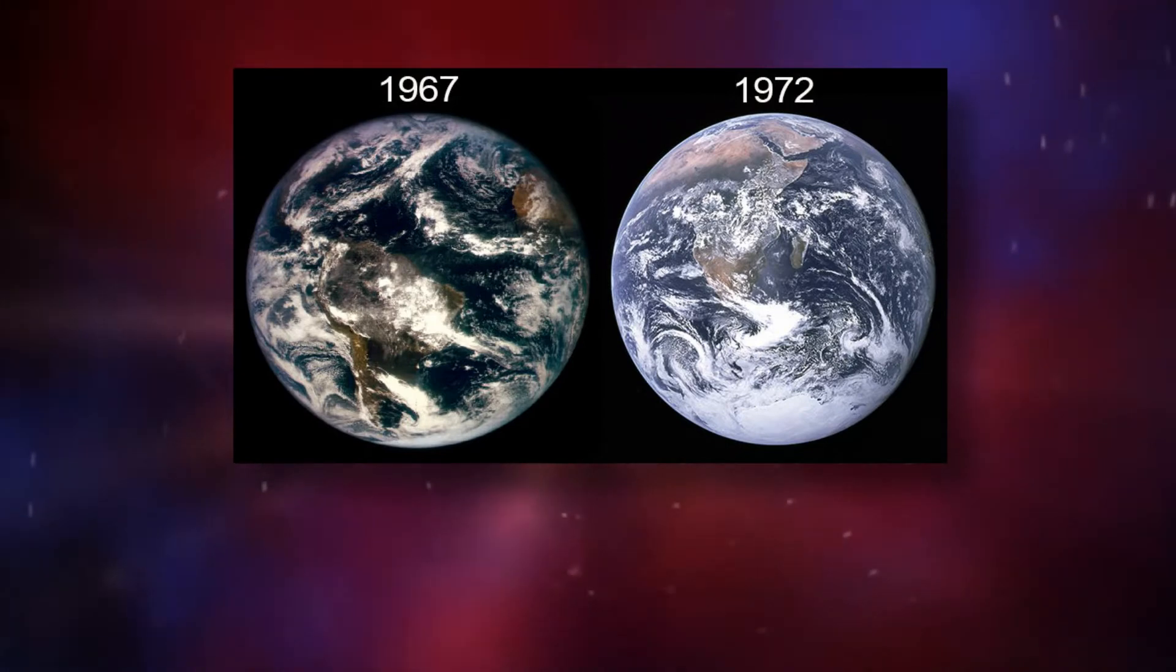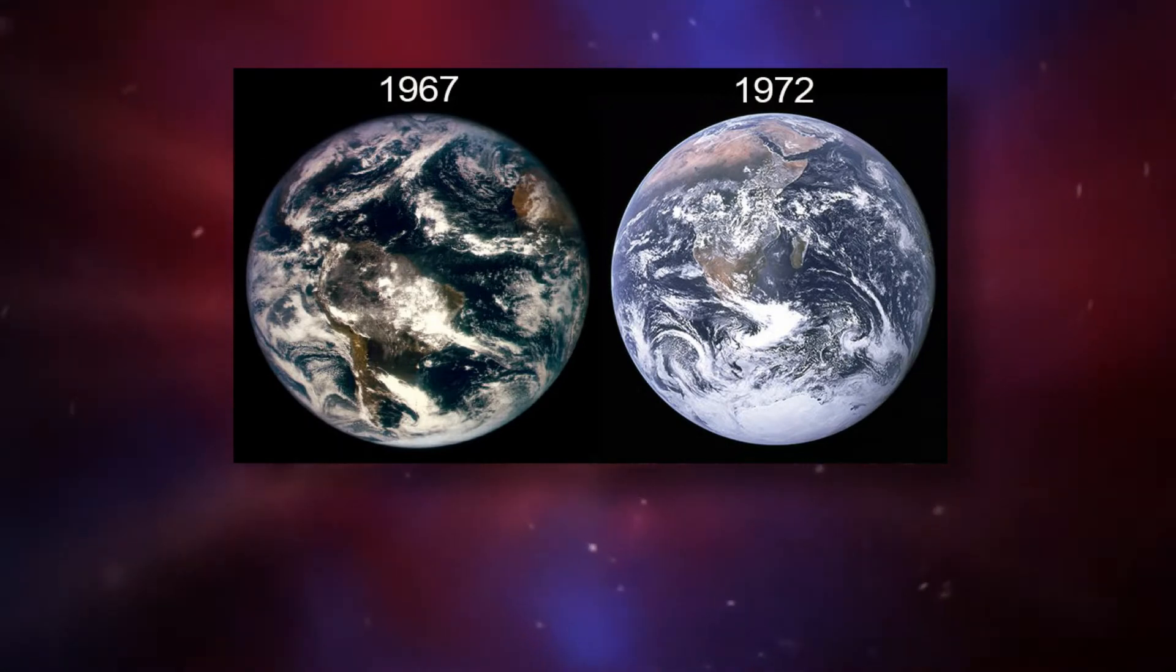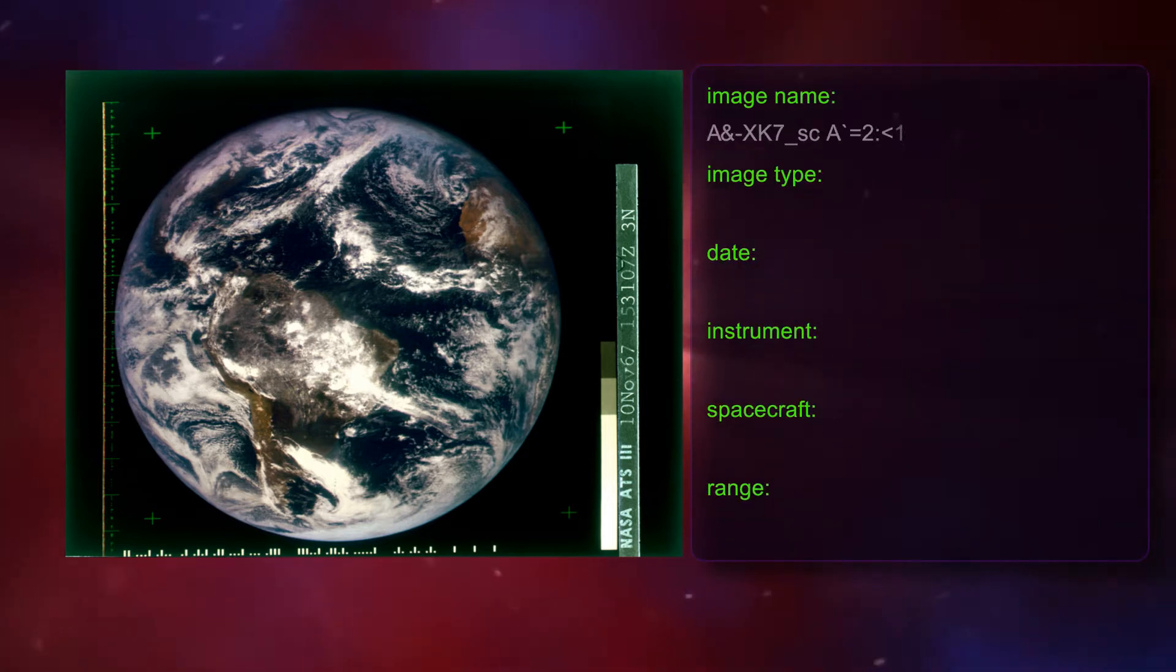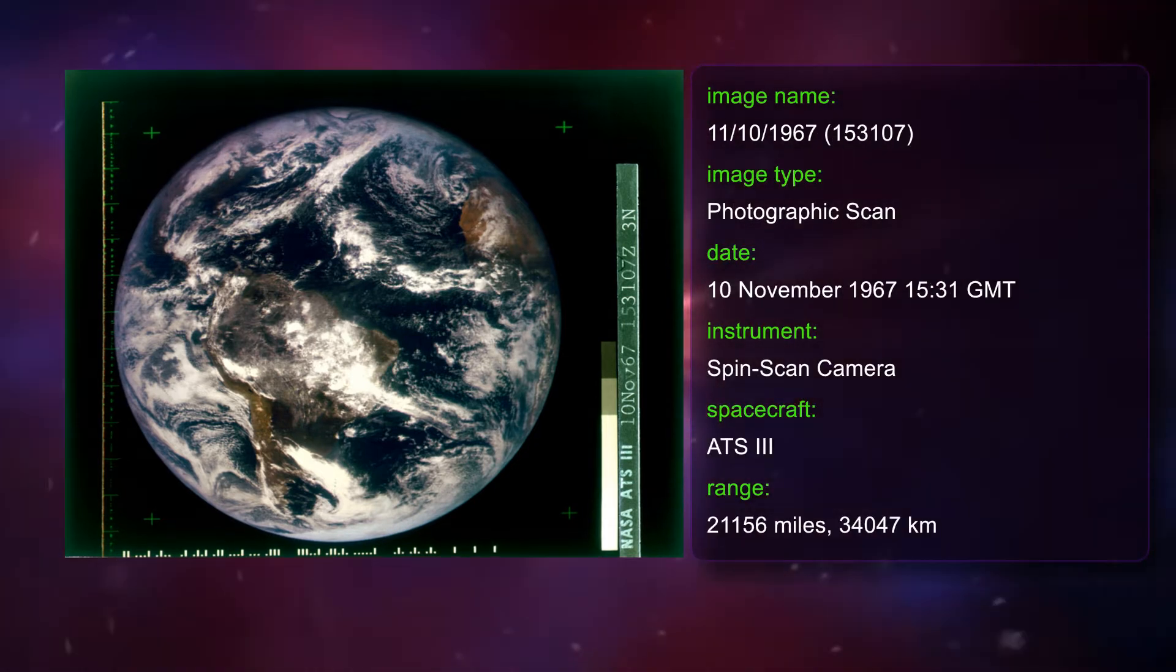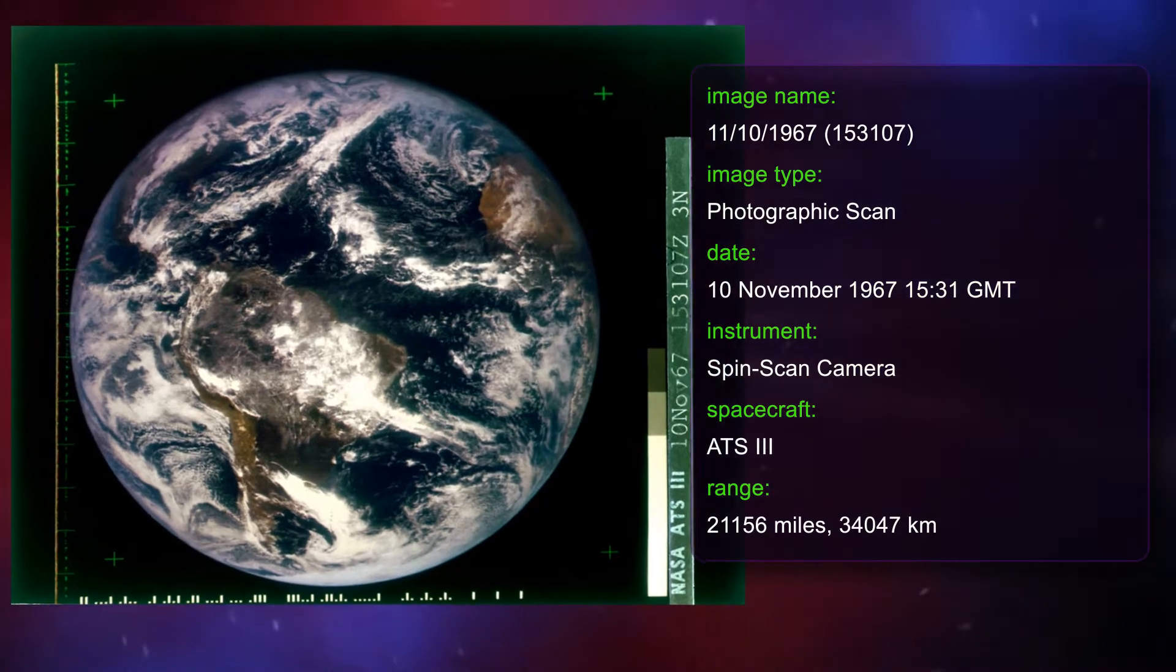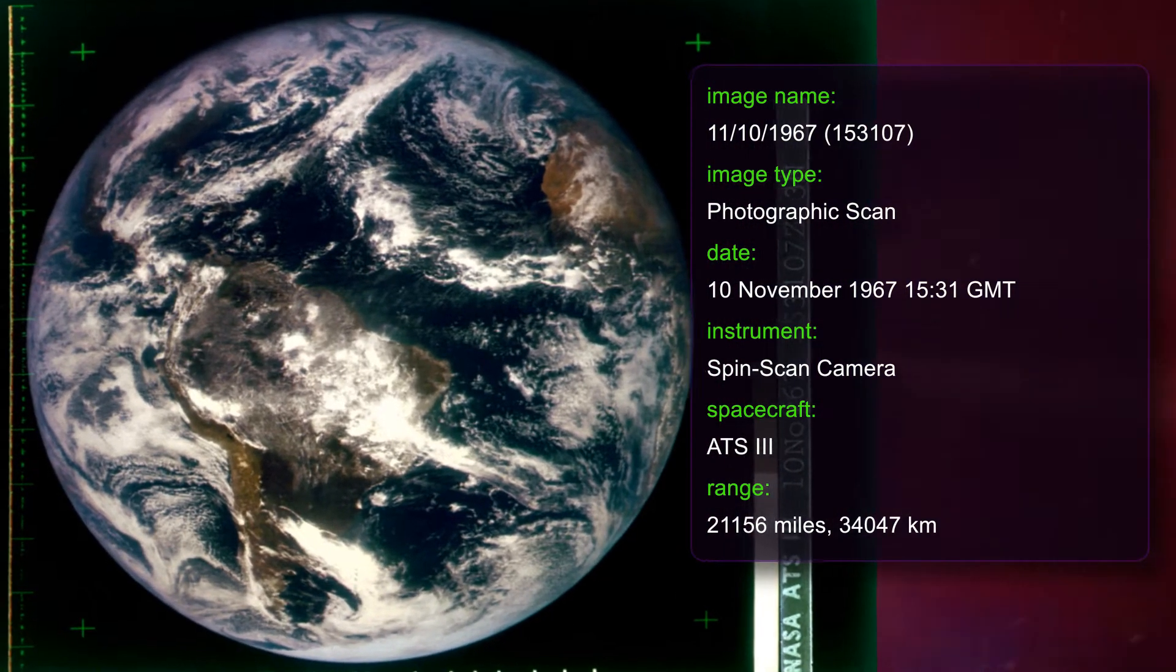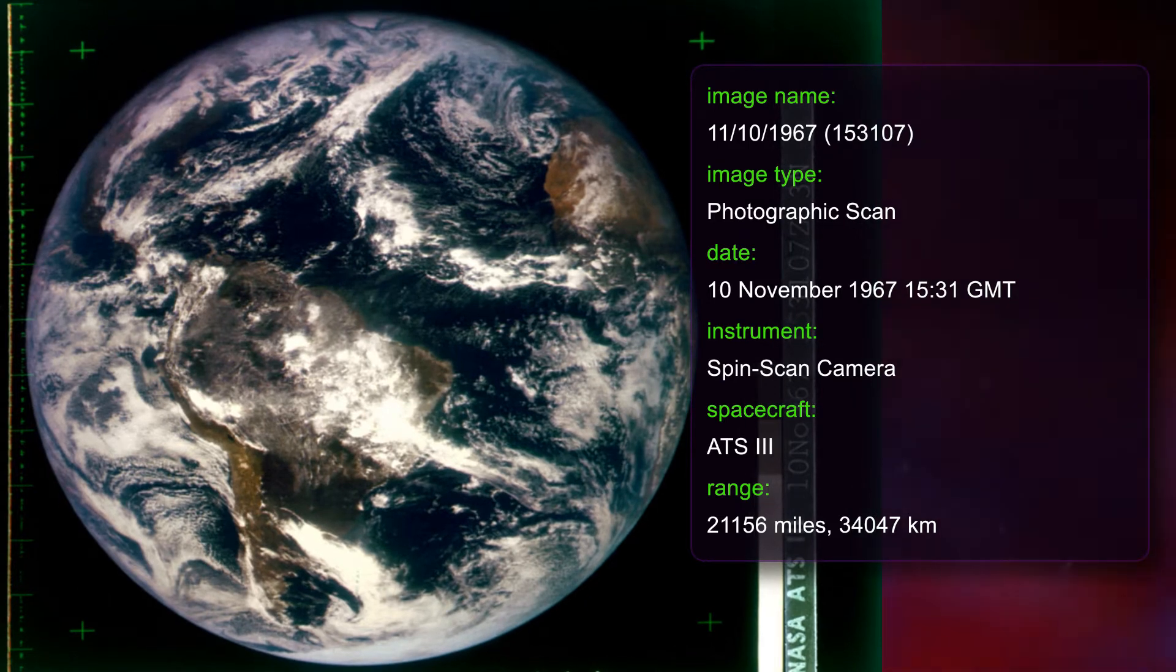I will also be looking at these two images which I have seen in some similar lineups. This is the first color photograph of the whole Earth. It was taken on the 10th of November 1967 from ATS-3, a satellite in a geosynchronous orbit 21,156 miles above the Earth.